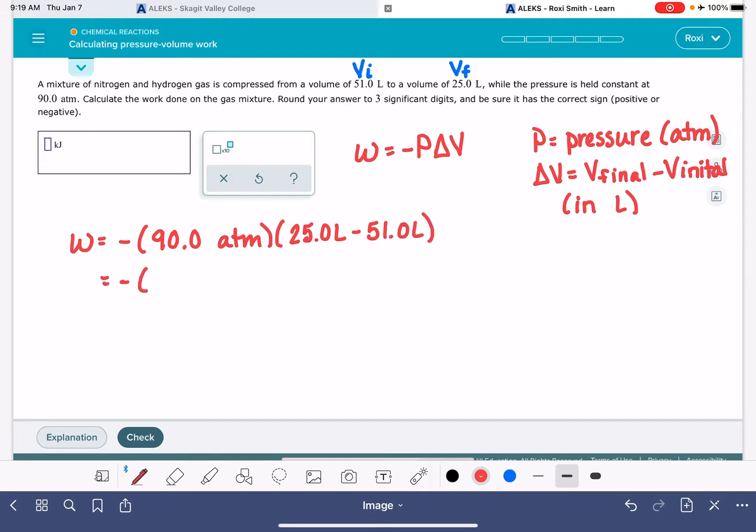So this is going to be 90 atmospheres times negative 26 liters. Using the calculator on this, 90 times 26 is, because there's two negative signs here, this works out to be a positive 2340, and the units on this are atmospheres times liters.